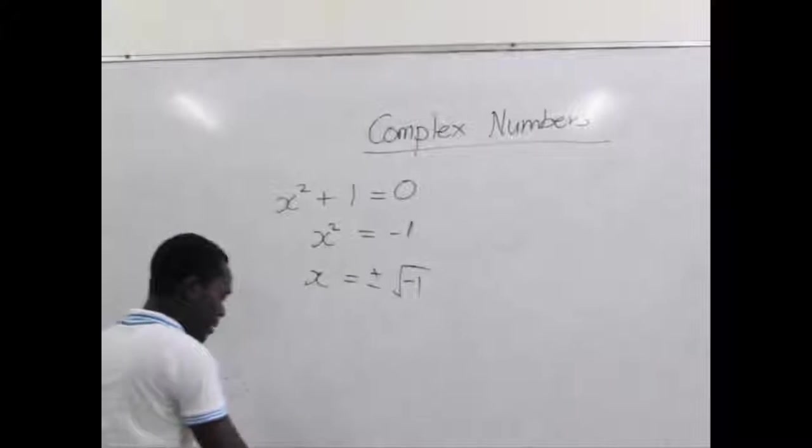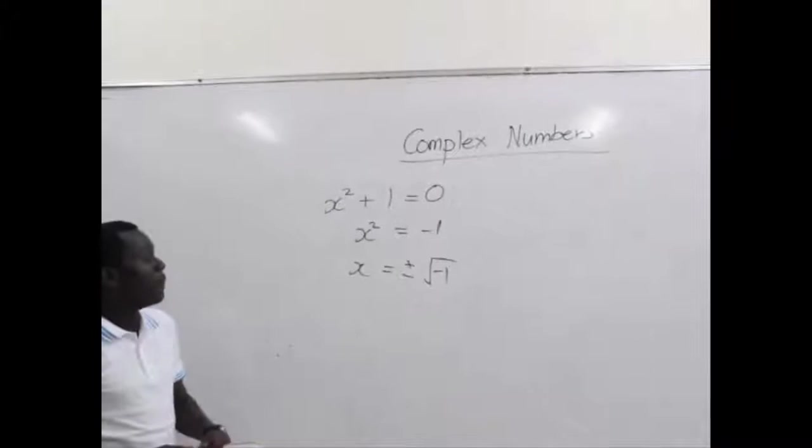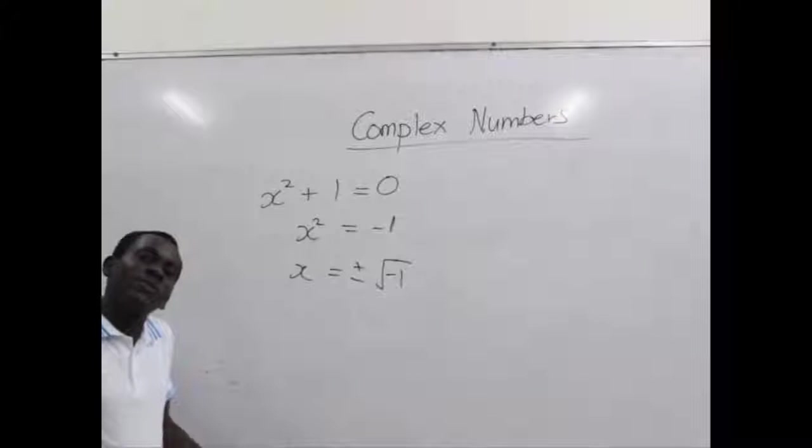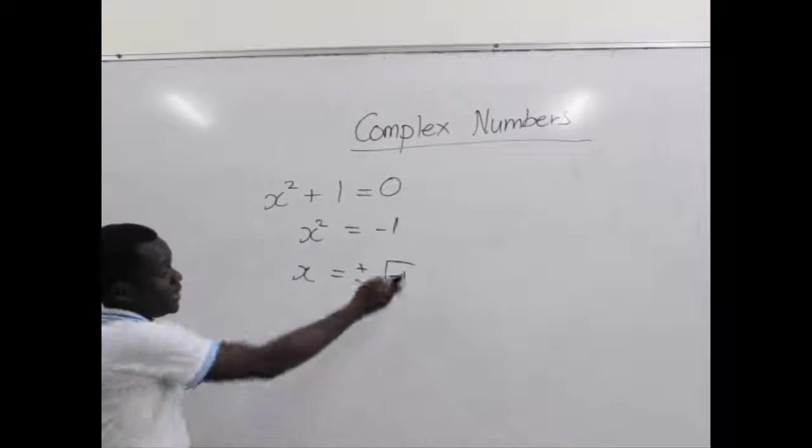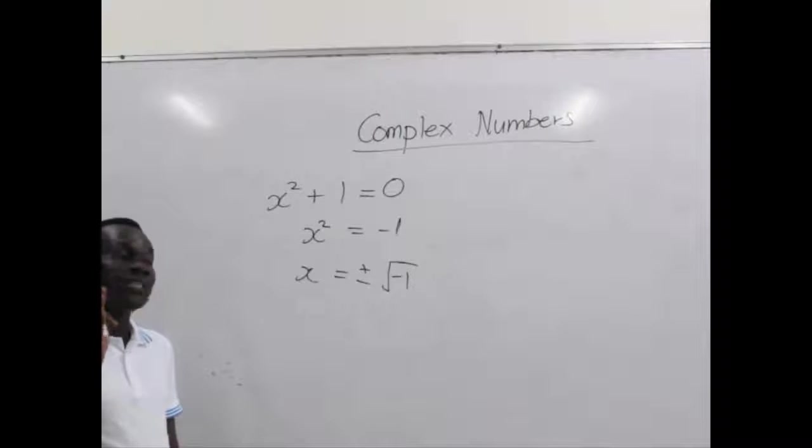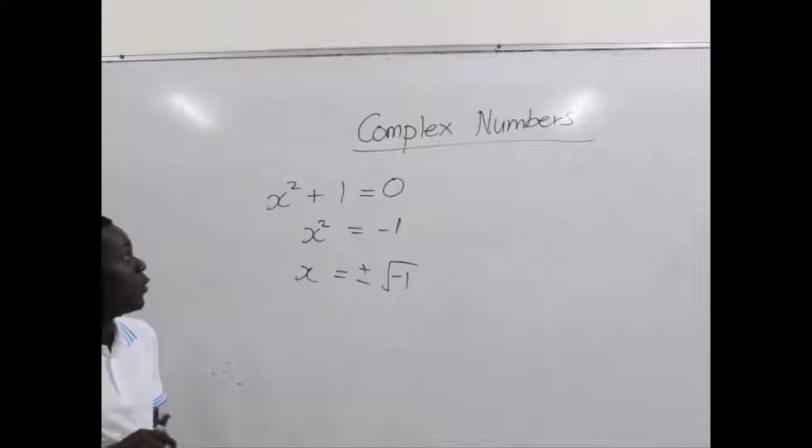So it may either be a positive square root of negative 1 or a minus square root of negative 1. But there is no way we can find the square root of negative 1. So this brought the idea of complex numbers.